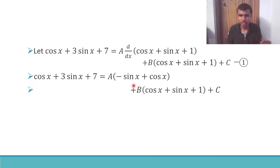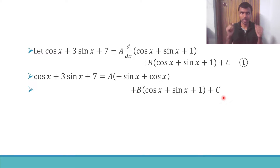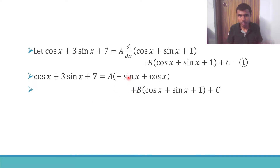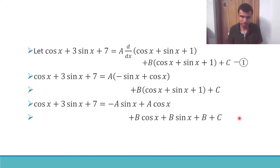Keep this one as it is, plus b into (cos x + sin x + 1), plus constant c. Now just expand: a into minus sin x is minus a sin x, plus a cos x, plus b cos x, plus b sin x, plus b, plus c.